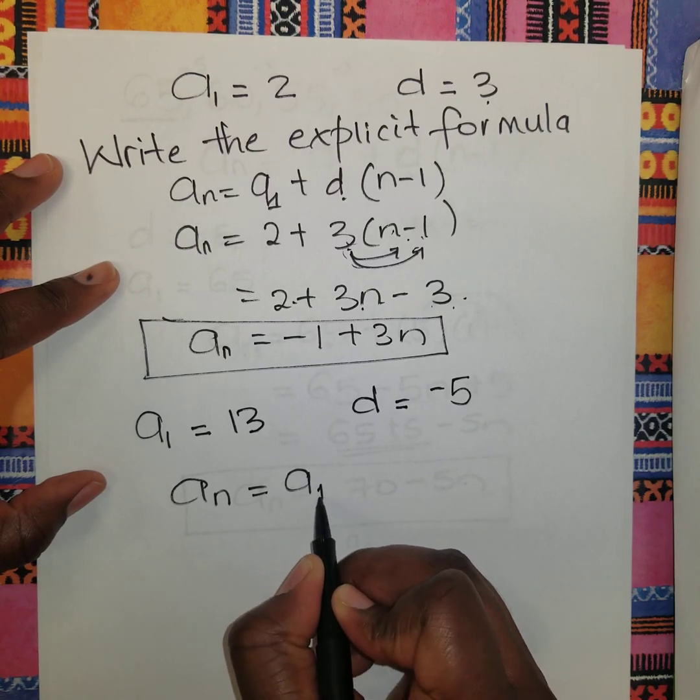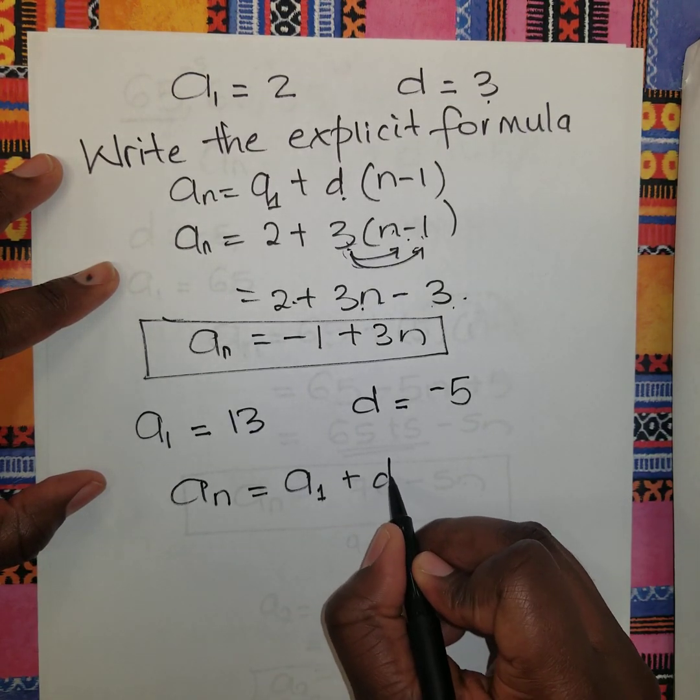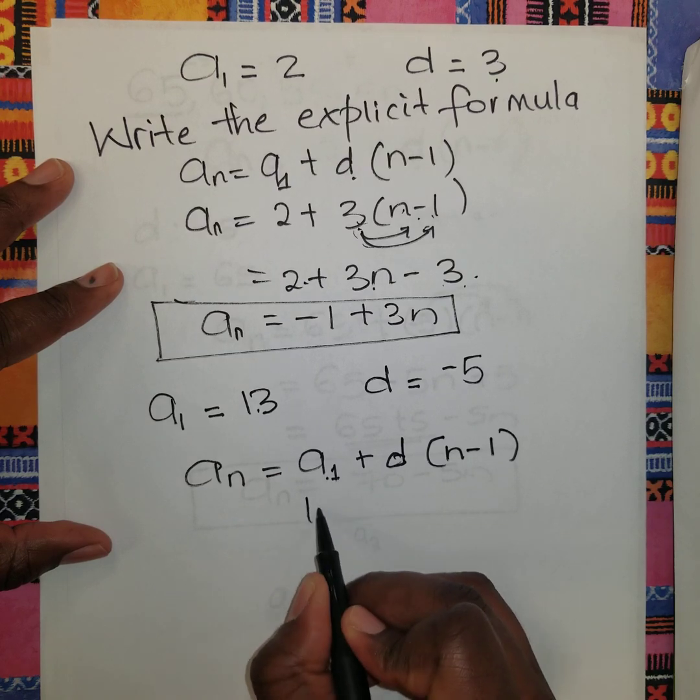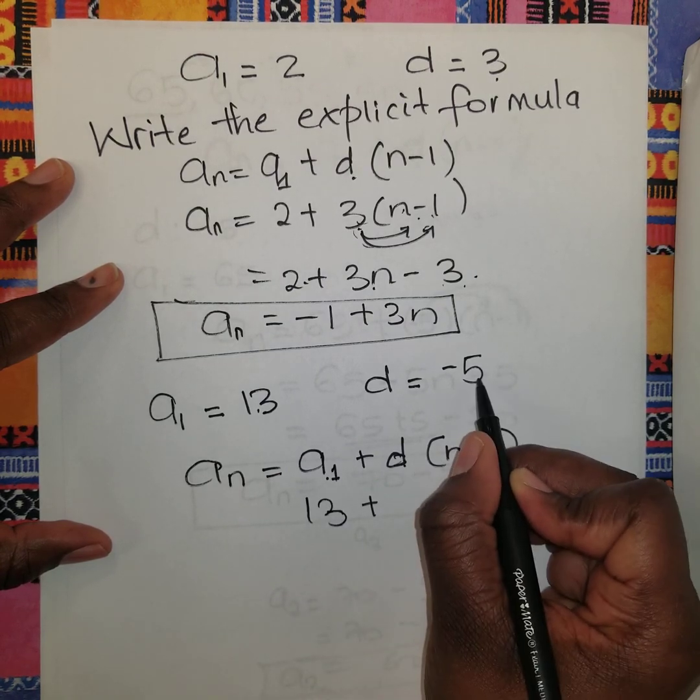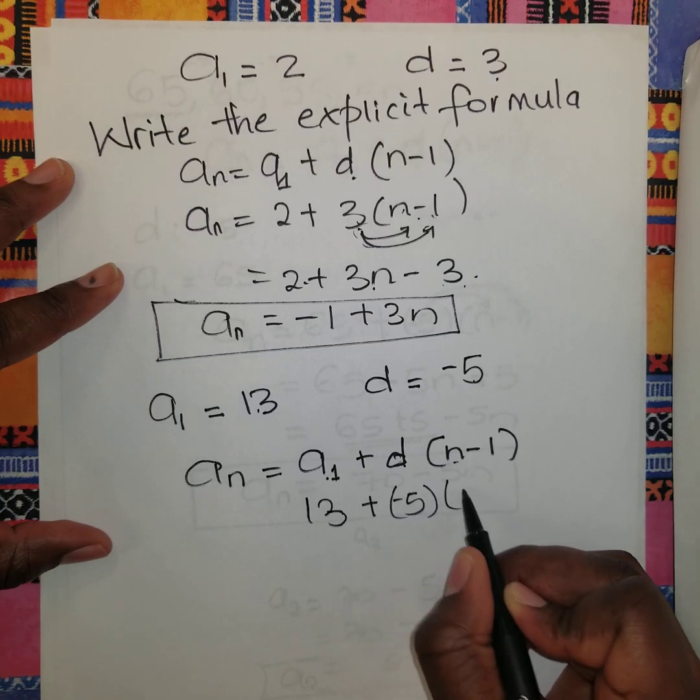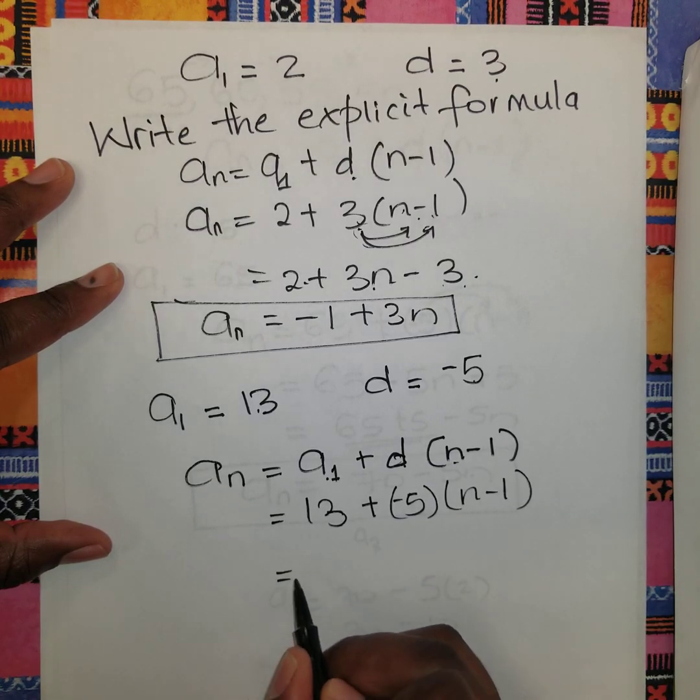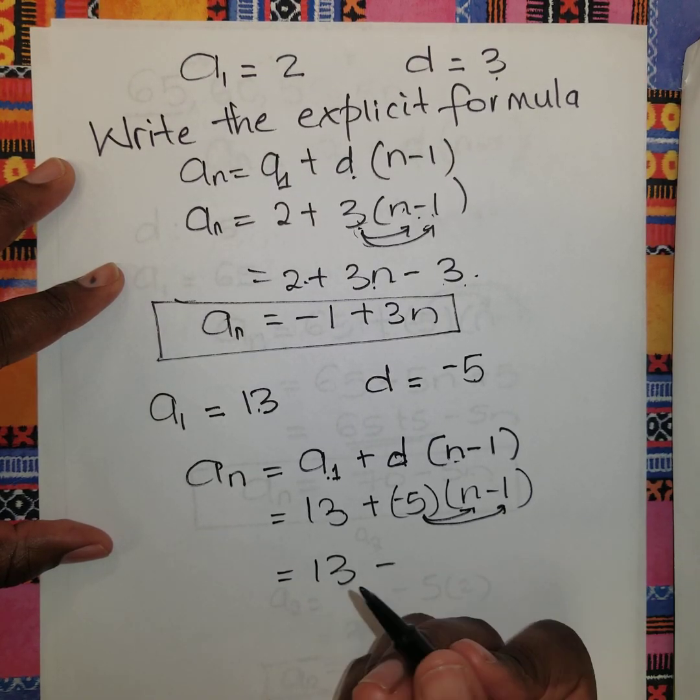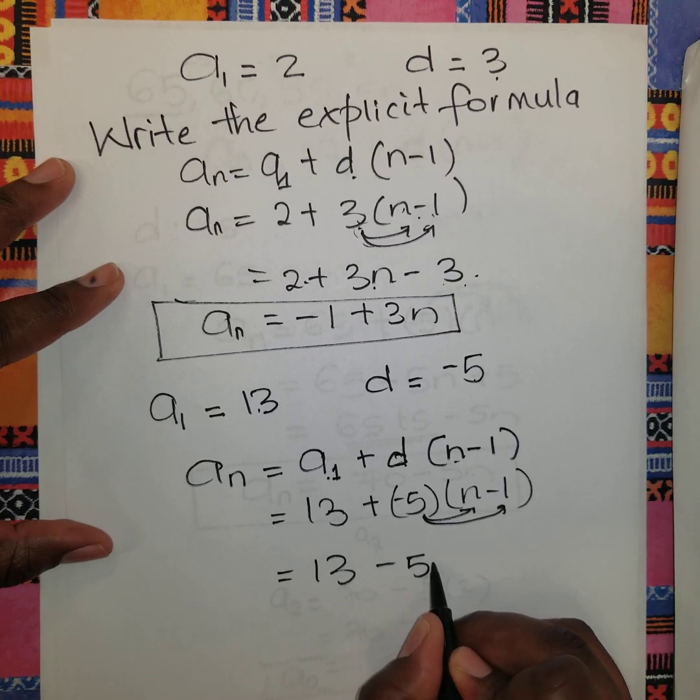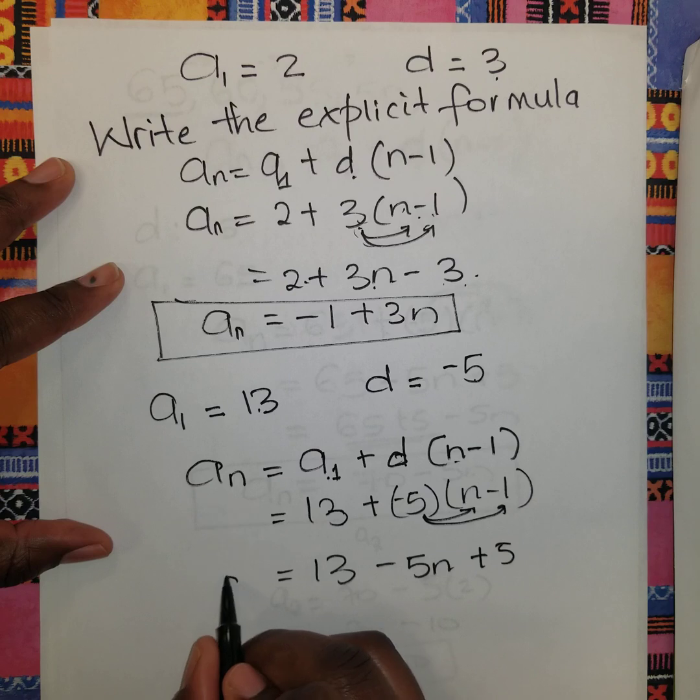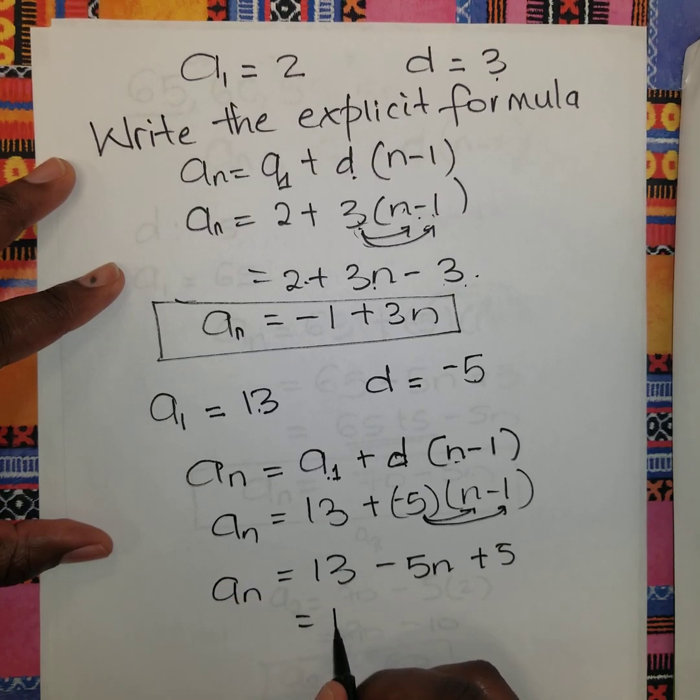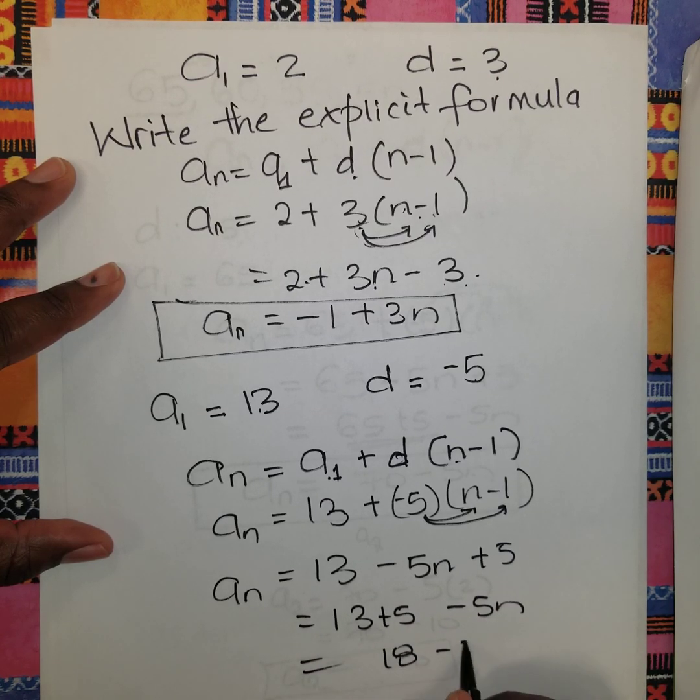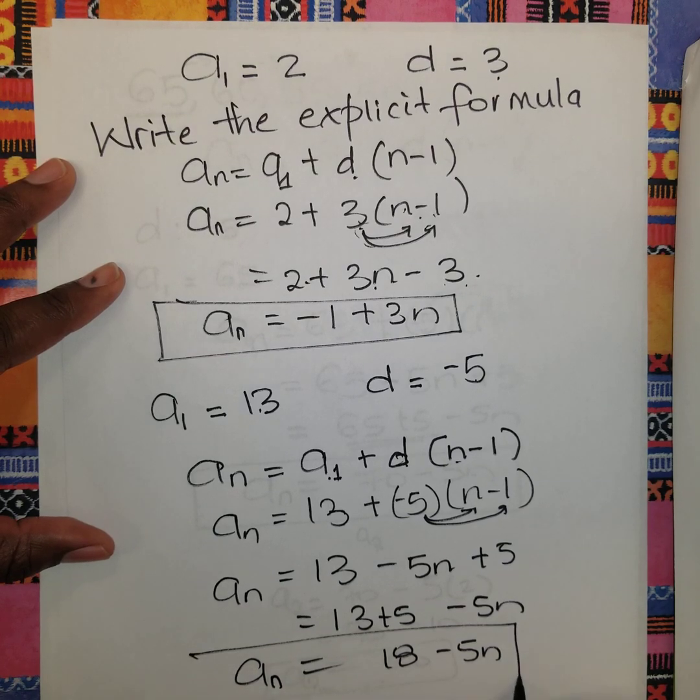For another example, a_1 = 13 and d = -5. So a_n = 13 + (-5)(n-1). Distributing: 13 - 5n + 5. It's always best to simplify the equation because that brings clarity when working with multiple terms. Simplifying: a_n = 18 - 5n. There's our explicit form.